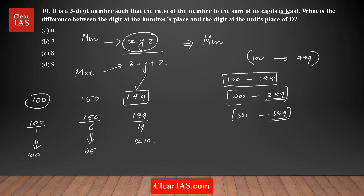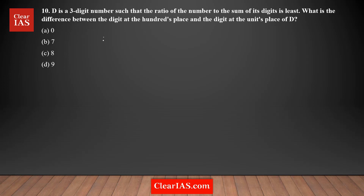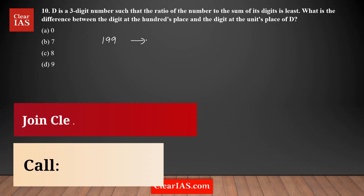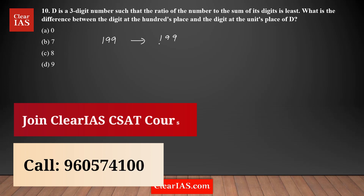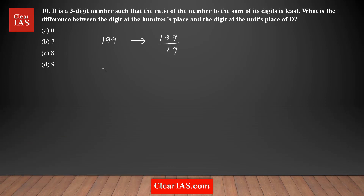Now I'm going to compare 199, 299, and 399 to see how the ratio is affected. For 199, the sum is 19. For 299, the sum is 2 plus 9 plus 9 equals 20. Comparing these two ratios: the denominator is increasing by only 1, but the numerator is increasing by 100.